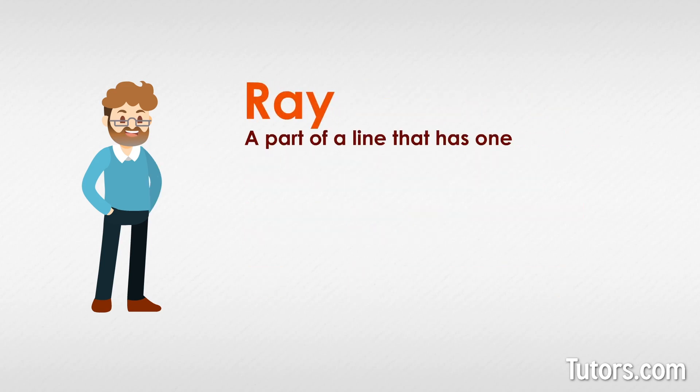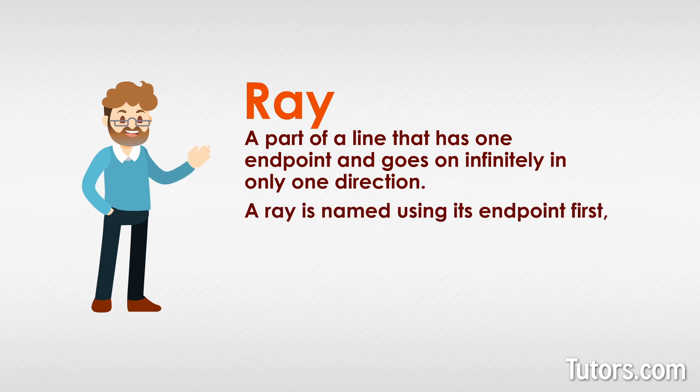A ray is a part of a line that has one endpoint and goes on infinitely in only one direction. You cannot measure the length of a ray. A ray is named using its endpoint first and then any other point on the ray. To symbolize a ray, you draw a line segment and place an arrowhead at one end like this.